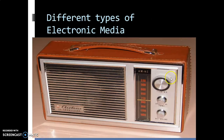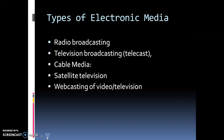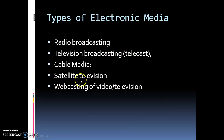Different types of electronic media — we will start with radio first. Types of electronic media include: radio broadcasting, television broadcasting (that is, telecast), cable media, satellite television, and webcasting of video and television.